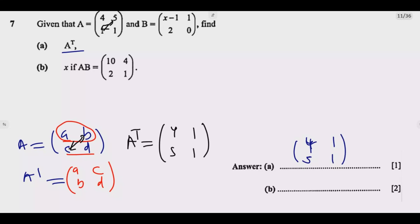Then we look at B. What it means is we need to multiply A and B. So what is A? A is 4, 5, 1, 1. We multiply it by B, which is X minus 1, then 1, then 2, then 0. Then we equate it to 10, 4, 2, 1 like that.